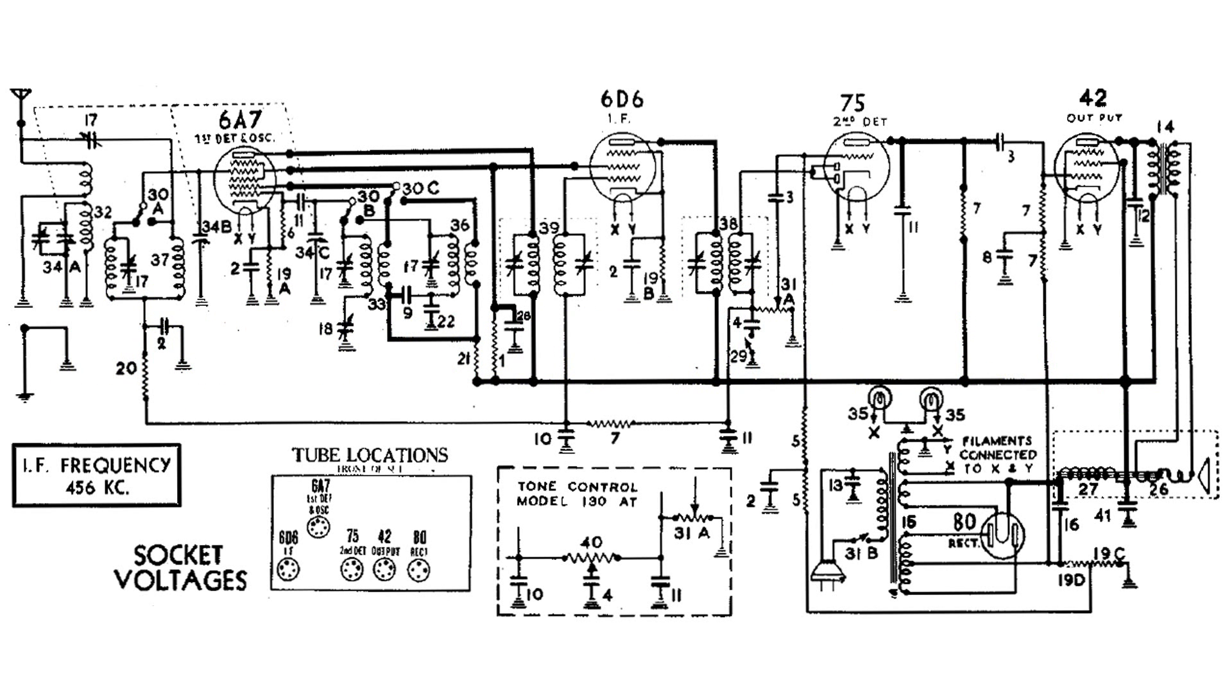This is the wiring diagram of the Stuart Warner model 1301. I'm going to start testing out the coils to determine if this radio is worthwhile fixing or not. I'm going to start in the lower right hand corner with the power transformer and then go up to the upper right corner to the audio output transformer.